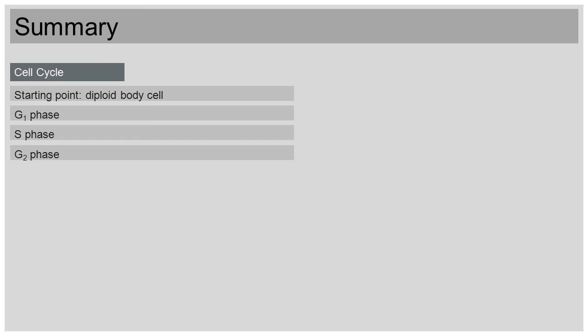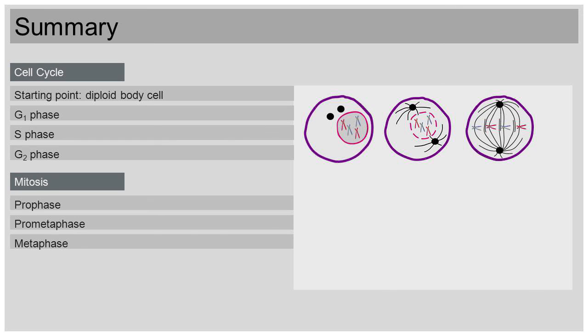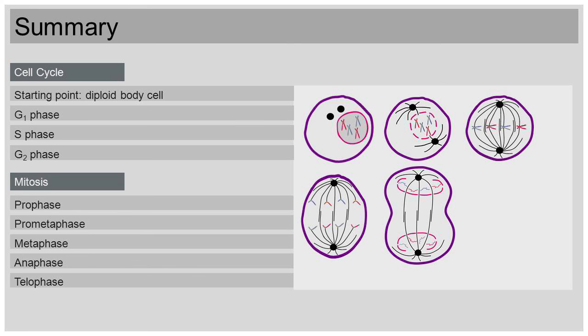Now, onto the G2 phase. During this phase, the duplicated DNA is checked for damage and more important proteins are made. Now, the mitosis can begin. We'll now show you all the graphics of mitosis in a row to illustrate the process. Let's start with the prophase. Next is prometaphase, metaphase, anaphase, and lastly, telophase. Mitosis is usually followed by the division of the cell, called cytokinesis. Two identical daughter cells with diploid sets of chromosomes are developed.